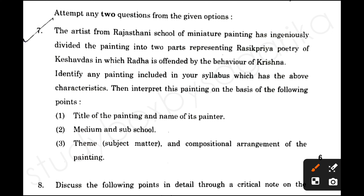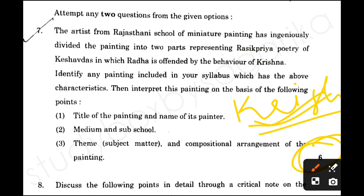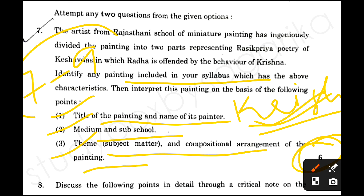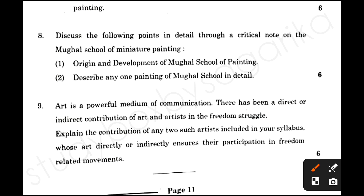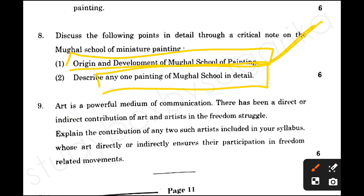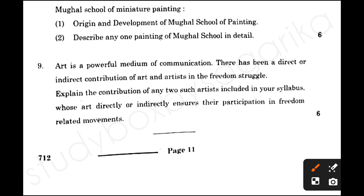Next is the artist from Rajasthani school. You have to tell about the painting — 'Krishna on Swing' — and explain all the details. You have to identify and tell everything: origin, and any painting which makes you good in that portion — like 'Krishna Lifting Mount Govardhan' or 'Falcon on Bird Rest.' Tell your answer and you will be right.